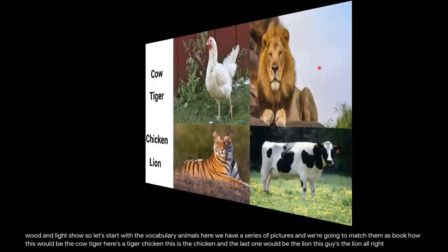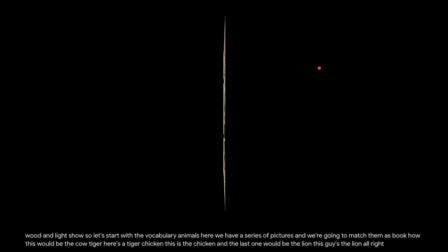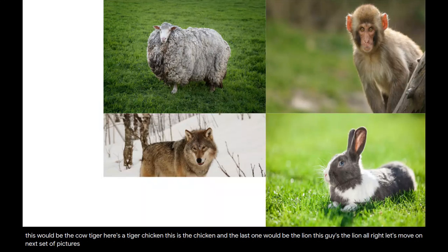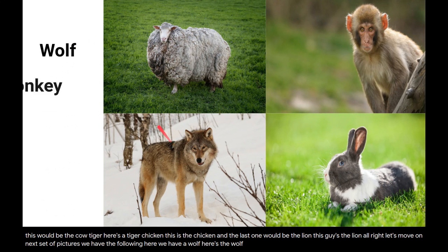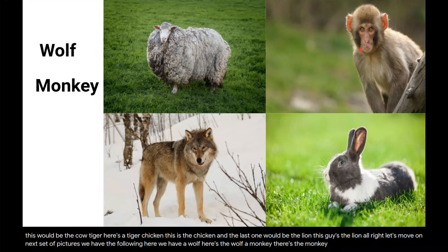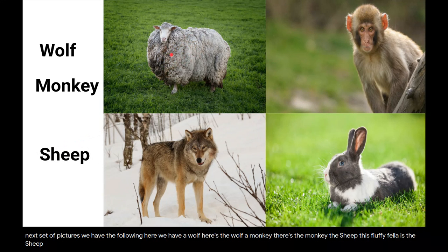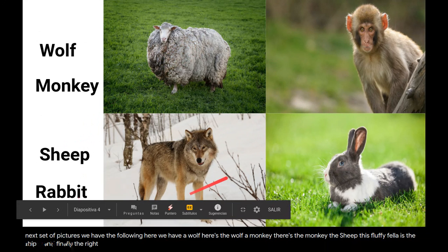Next set of pictures: here we have a 'wolf' — here's the wolf. A 'monkey' — there's the monkey. The 'sheep' — this fluffy fella is the sheep. And finally the 'rabbit' — here's our rabbit.